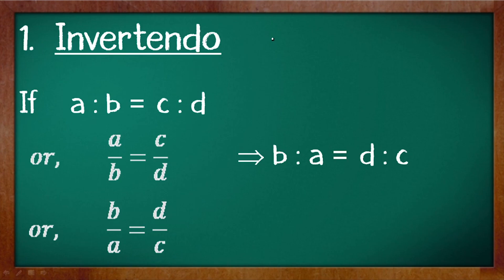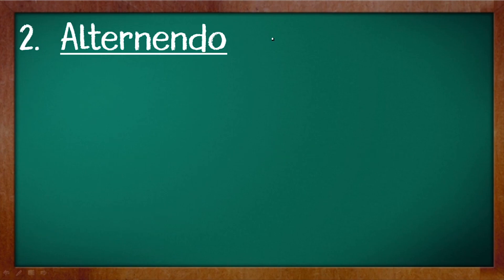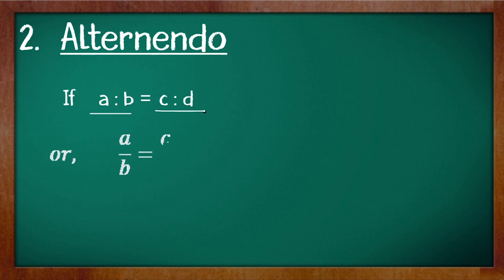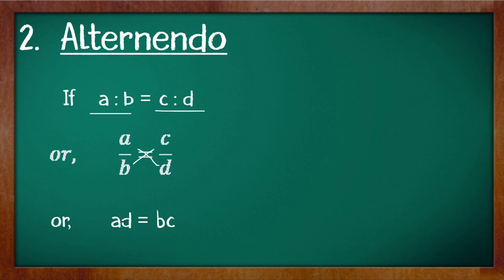Let's see the next property, alternando. In this, suppose there is a ratio a is to b equals to c is to d. Writing that into fraction form we have a by b is equals to c by d. After cross multiplication we get a into d is equals to b into c.